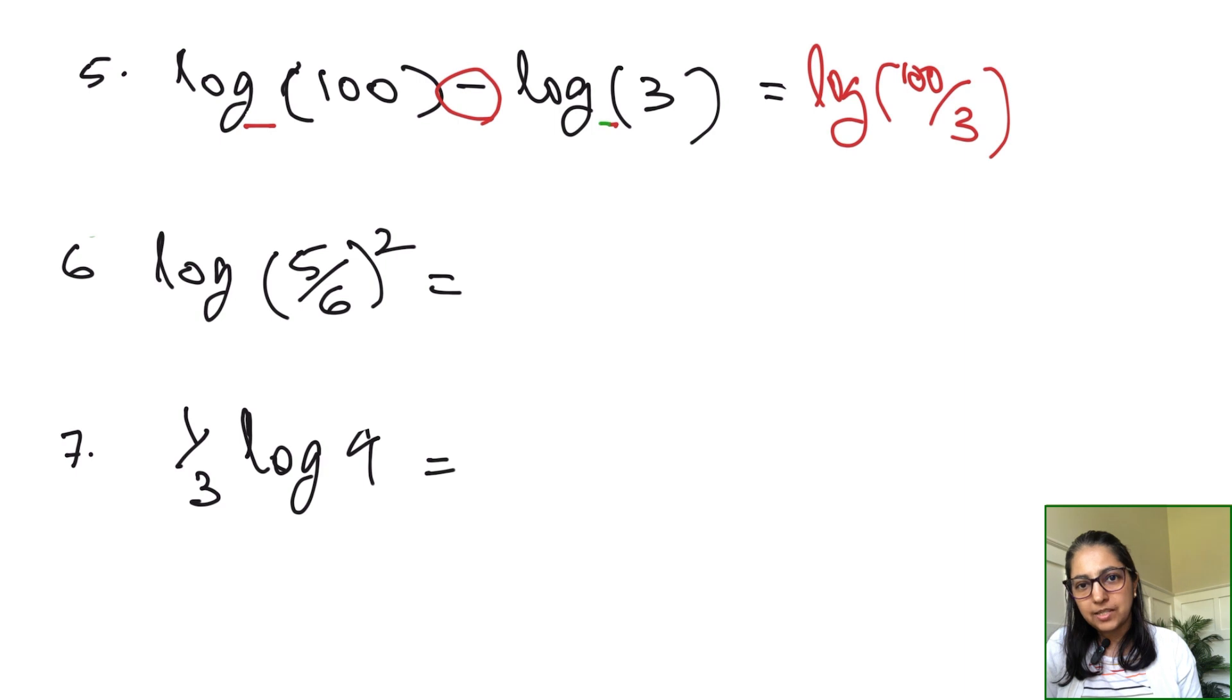Next example utilizes power rule and quotient rule. This is given to us in condensed form, we will write an expanded notation. After we identify the property step by step, we take care of it. You will take the power in front: 2 log 5 minus log 6.